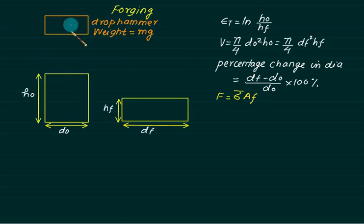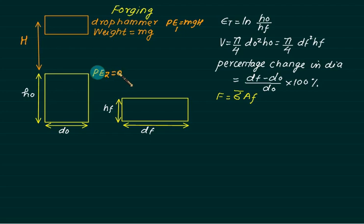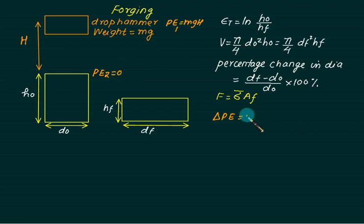Forging normally requires very large force. A drop hammer is dropped from height H and has weight Mg. Initially it has potential energy equal to MgH; the final potential energy is zero with respect to the datum. So the change in potential energy equals P1 − P2 = M × G × H, and this is the energy used to strike the job.